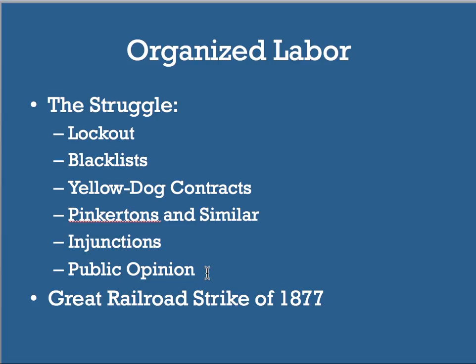More aggressive tactics include the Pinkertons and state militias called out to violently put down strike attempts, as well as court injunctions to stop strikes. Big business pushes the idea throughout society that organized labor is anarchy, socialism, or communism. This issue of organized labor comes to a head with the Great Railroad Strike of 1877, during the Panic of 1873 — with about half a million people on strike as railroads cut their wages. President Rutherford B. Hayes sends the National Guard; over 100 people die.